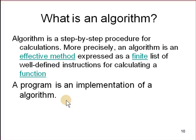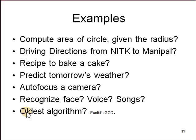What's a programmer? A programmer implements an algorithm. An algorithm doesn't have to be implemented — it's just a description in a well-defined manner. Programming is writing code to run the algorithm. Algorithms are typically written in pseudo code; programming is written in a programming language that runs on a computer. Examples of algorithms include computing the area of a circle, driving directions, recipes, predicting weather, autofocus, and recognizing faces. The oldest algorithm is Euclid's GCD algorithm, though there may be older ones depending on how far back in history we look.